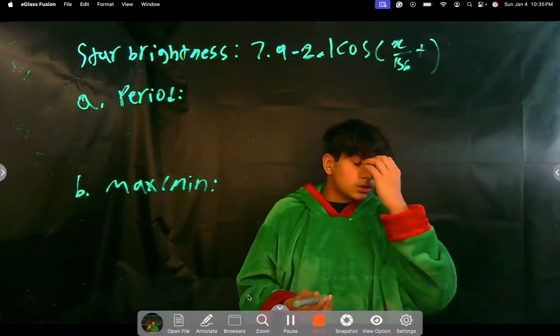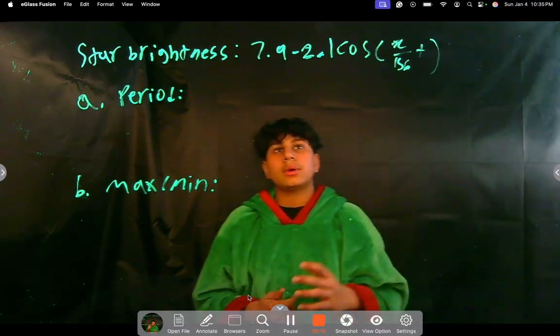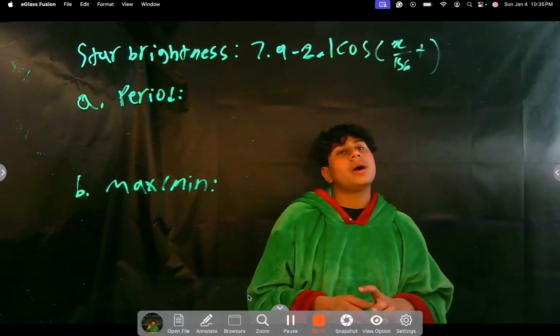We're given in the problem that the star's brightness is modeled by 7.9 minus 2.1 cosine of pi over 156t.